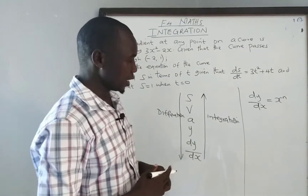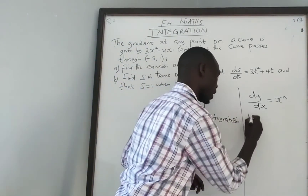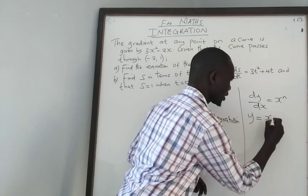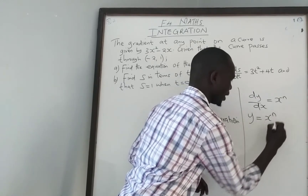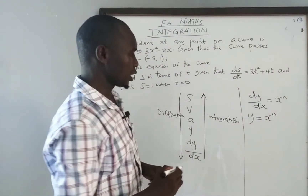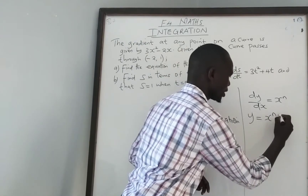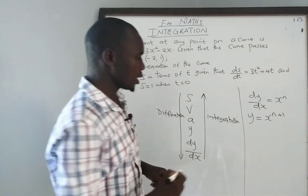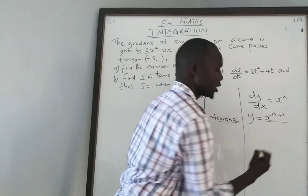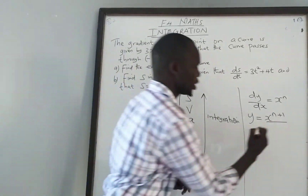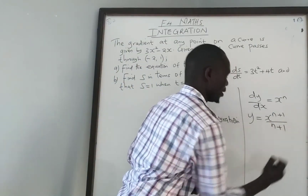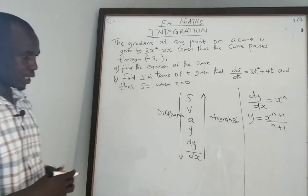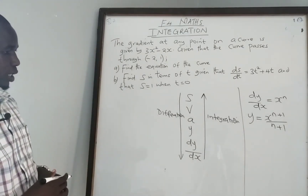To find the integral value, where dy over dx equals x to the power n, under integration we increase the power of x by 1, then divide by the total new power, which is n plus 1. That is generally how we do integration.